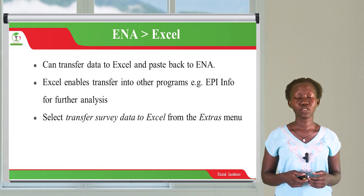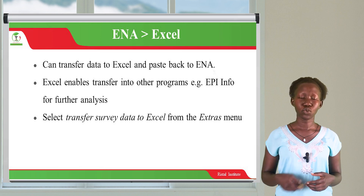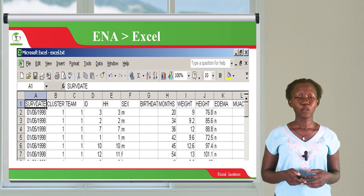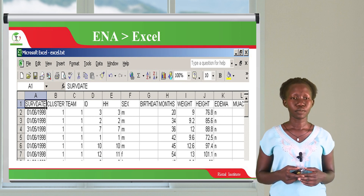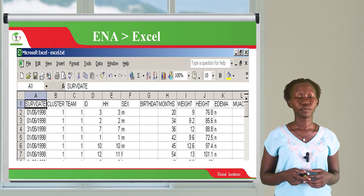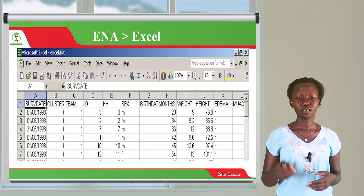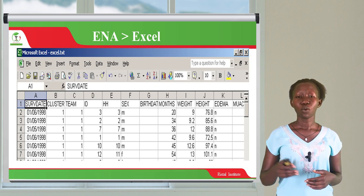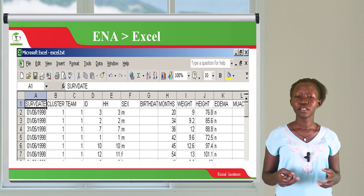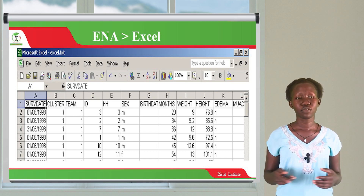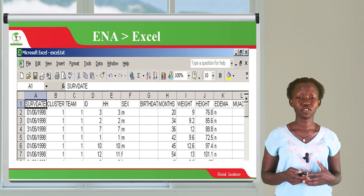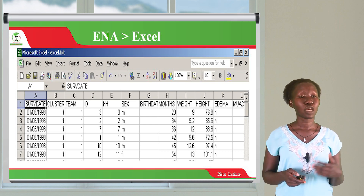You select 'Transfer data to Excel' from the extras menu and you are given the results in Excel. This is how your results will appear when you transfer them into Excel — you have the survey dates, when you entered the data and the assessment. Then you have the variables: sex, age, weight, height, edema, and all the other variables that you need to work with in nutrition assessment. You can insert and work with all of them.